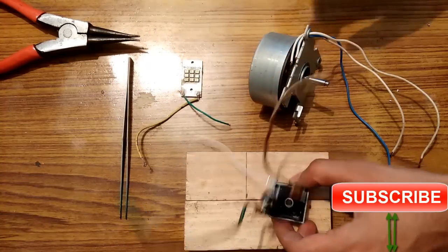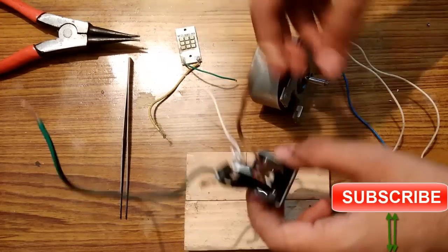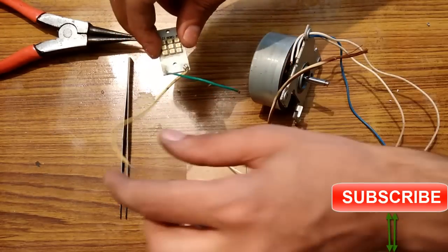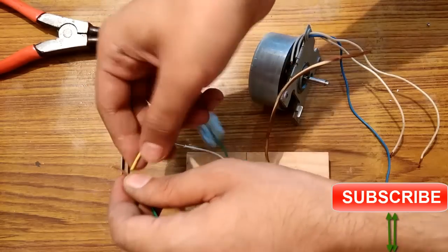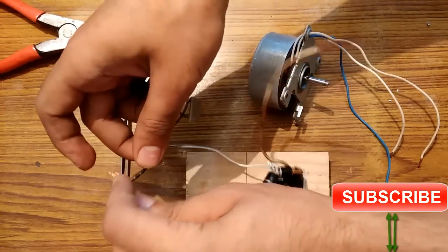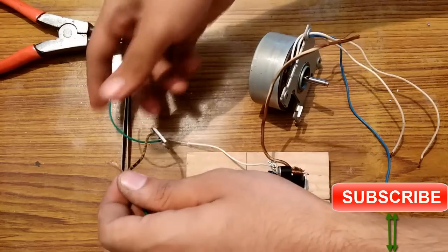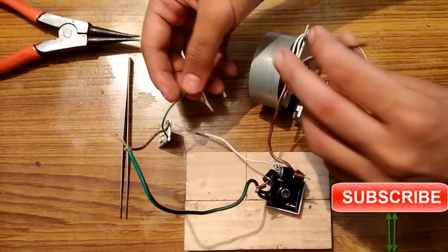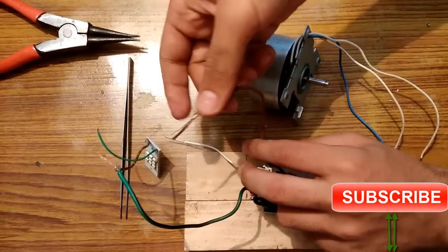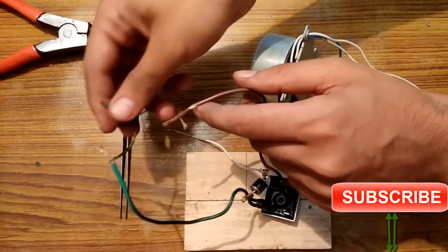So for connections, the green one is the positive. So the positive of this LED will be connected here, like this. And the negative of the LED will be connected to the brown wire.